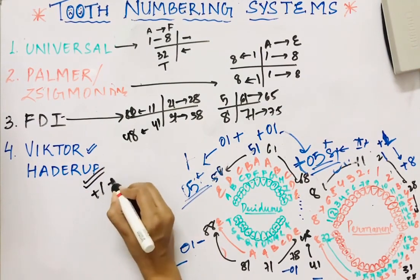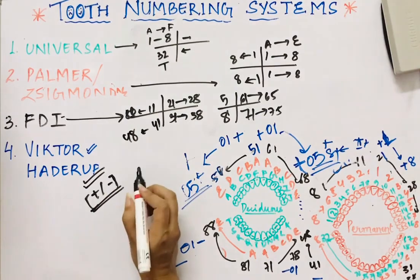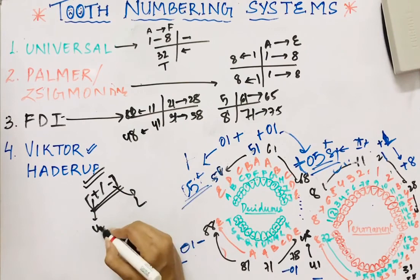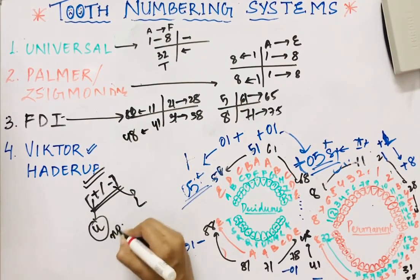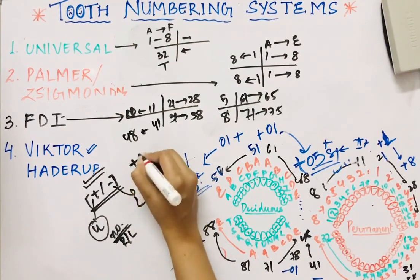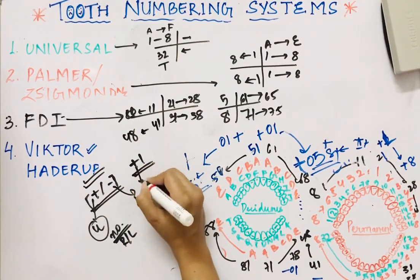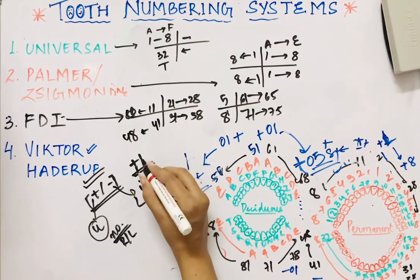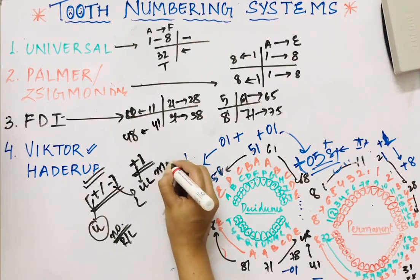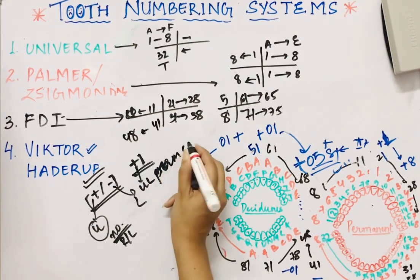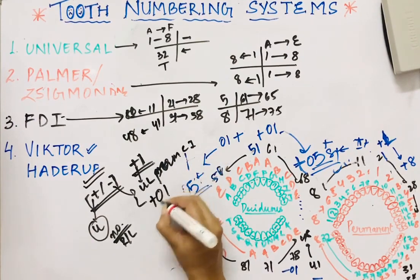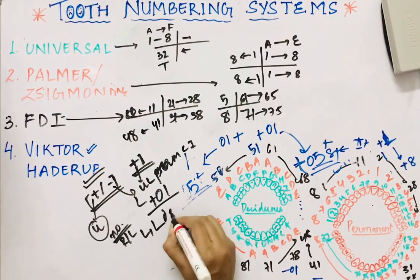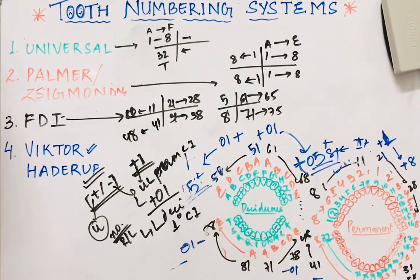Victor Haderup used plus and minus signs: plus for upper, minus for lower. The side on which the number is written indicates right or left. So '+1' (number on left) means upper left permanent central incisor, and '+0,1' means upper left deciduous central incisor. That concludes the topic of tooth numbering systems and their advantages and disadvantages. I hope I've made myself clear. Thank you, keep visiting.